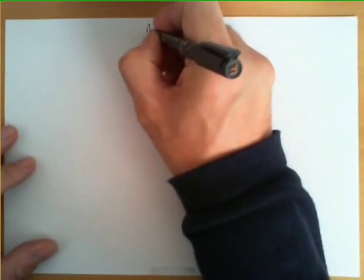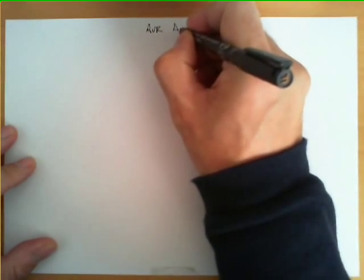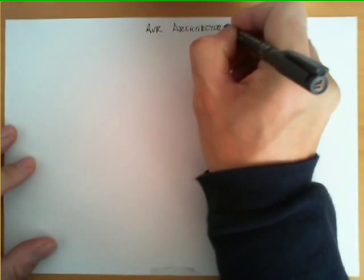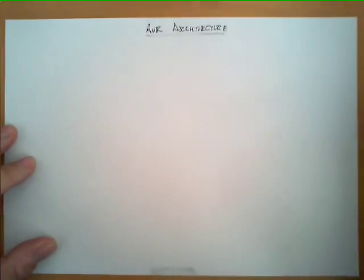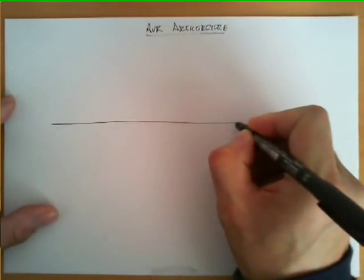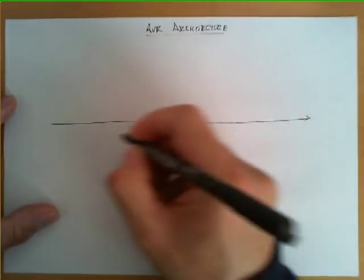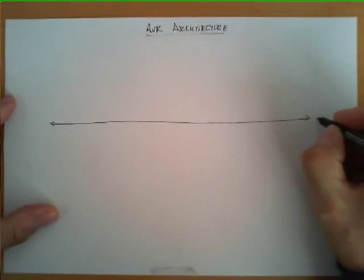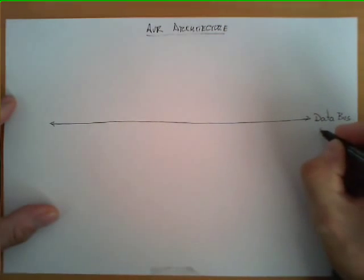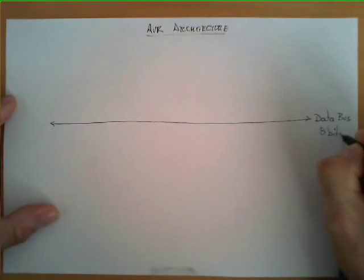In this video we are going to describe the block diagram of the AVR architecture. The first element we are going to draw from this architecture, and perhaps one of the most important, is a continuous line to which most of the blocks will be connected, which is called the data bus. In this architecture, this data bus has 8 bits.